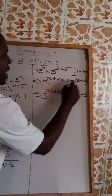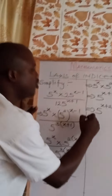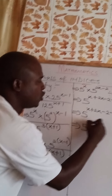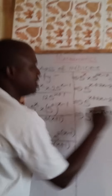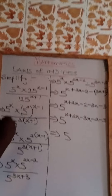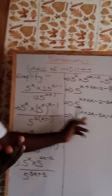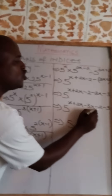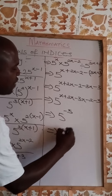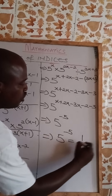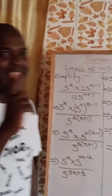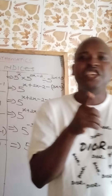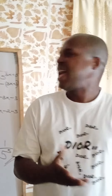Now I can open the bracket and simplify the powers. I have x plus 2x minus 2, then opening the bracket gives minus 3x minus 3. Collecting like terms: x plus 2x minus 3x gives 0x, so the x terms cancel out completely. We are left with minus 2 minus 3, which equals minus 5. Our answer is 5 raised to the power of minus 5, which is also equal to 1 over 5 raised to the power of 5.